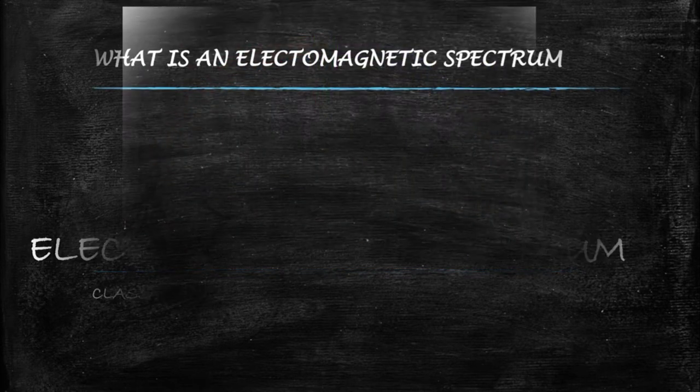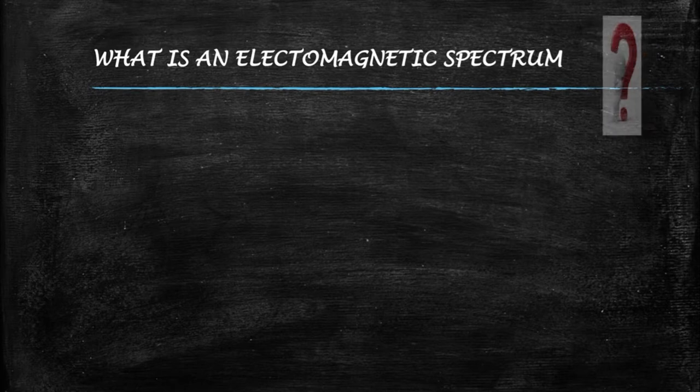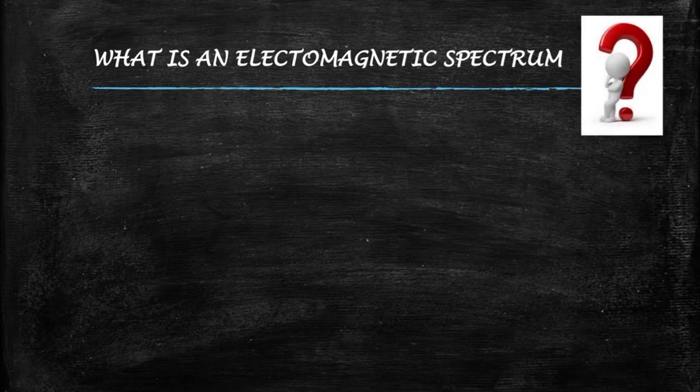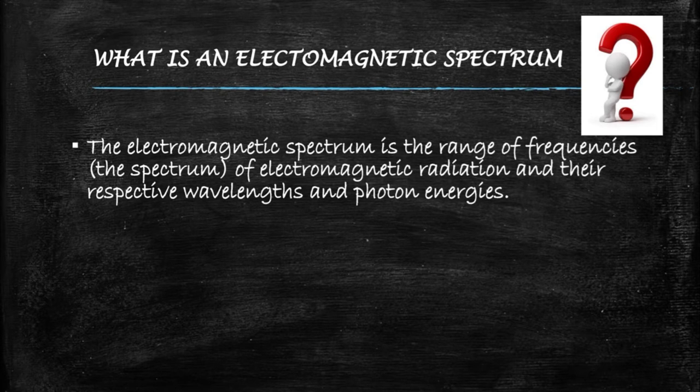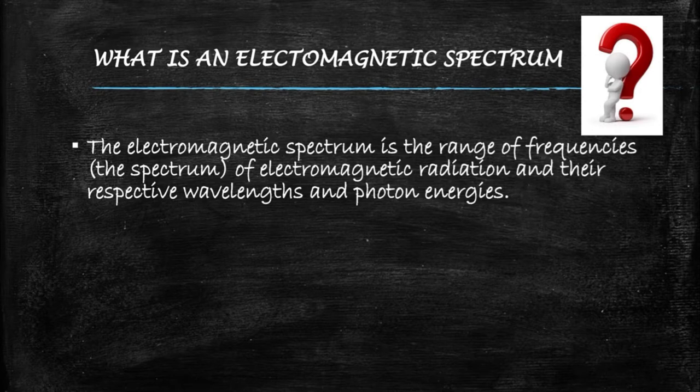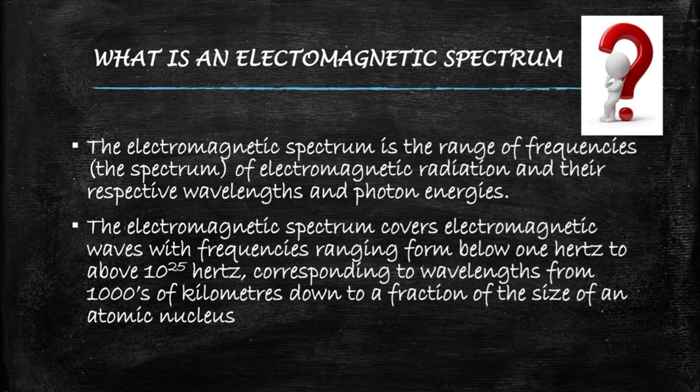Before knowing what is an electromagnetic spectrum, let's see what is electromagnetism. It is a branch of physics involving the study of electromagnetic force, which is a type of physical interaction that occurs between electrically charged particles. And what do you mean by a spectrum? It is a range of frequencies.